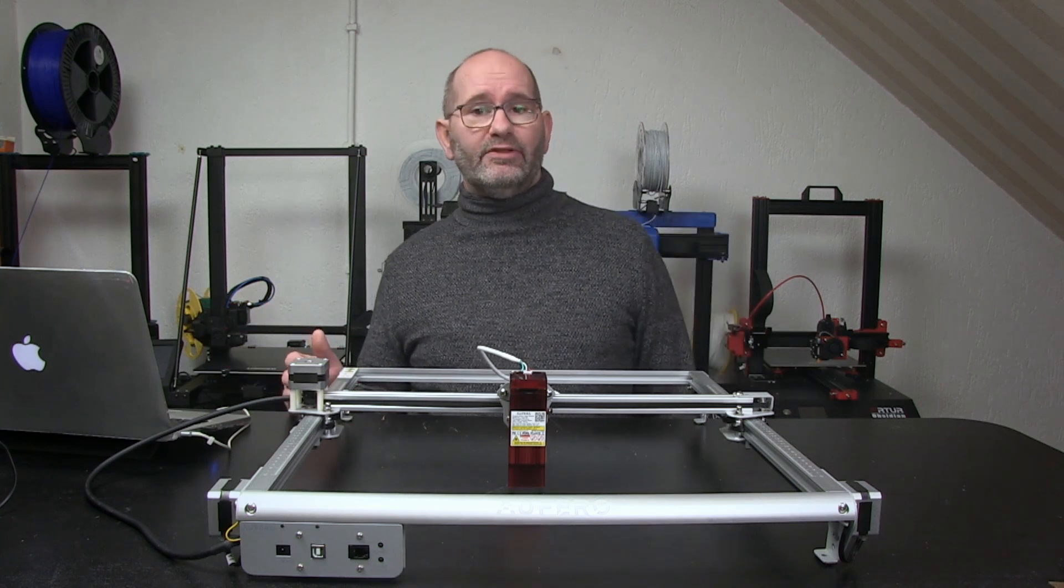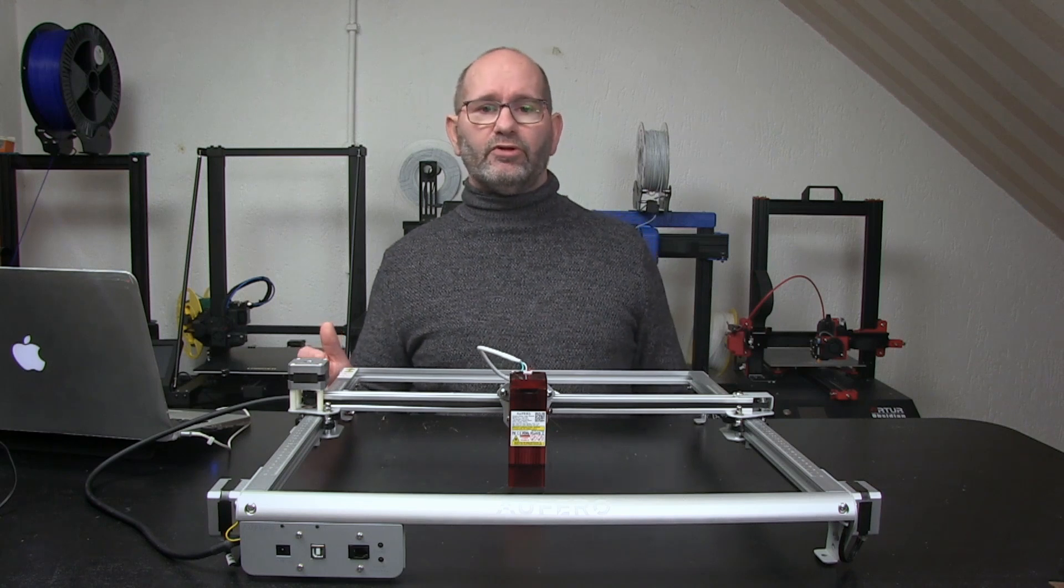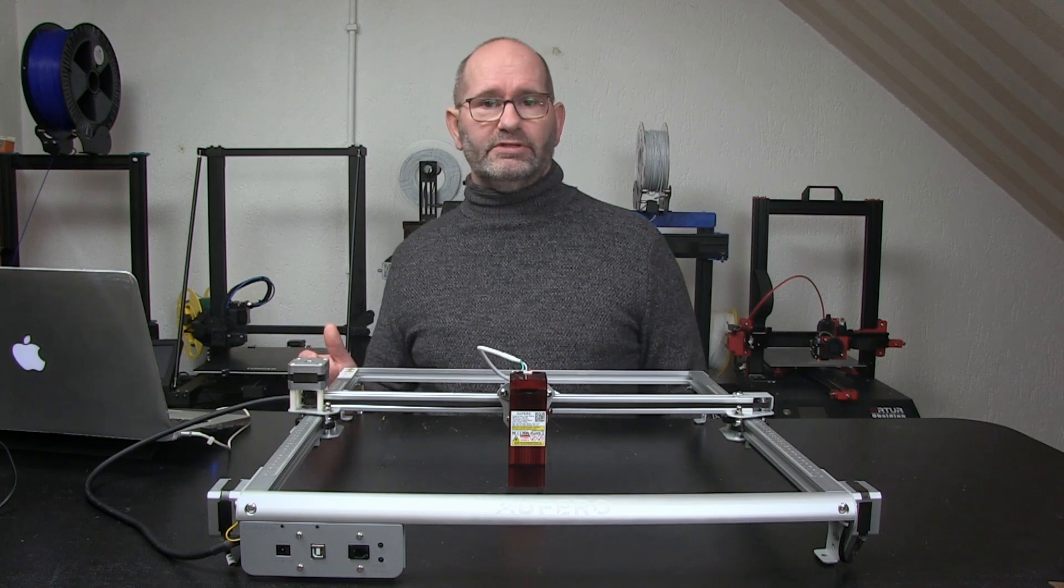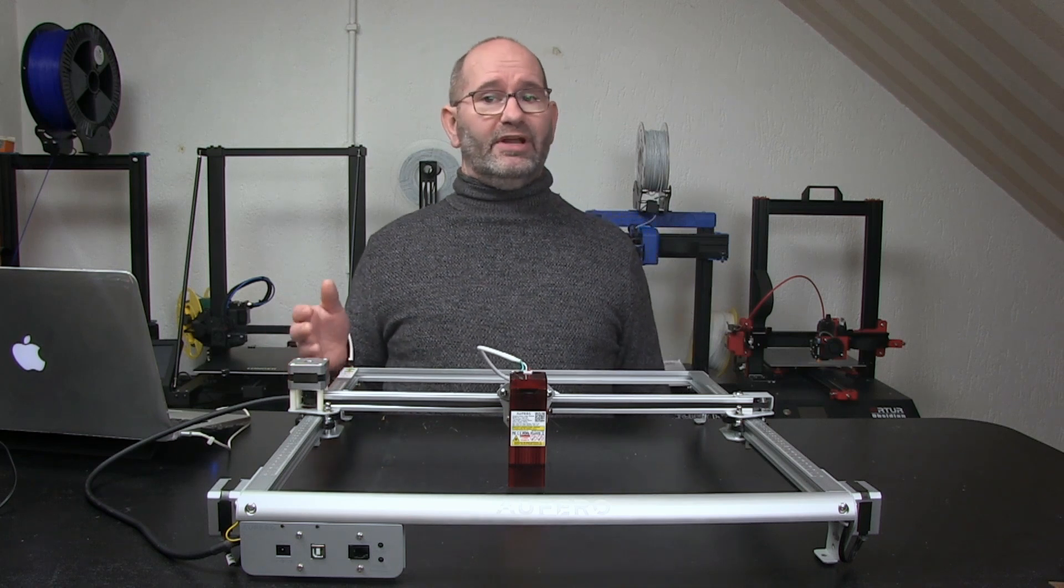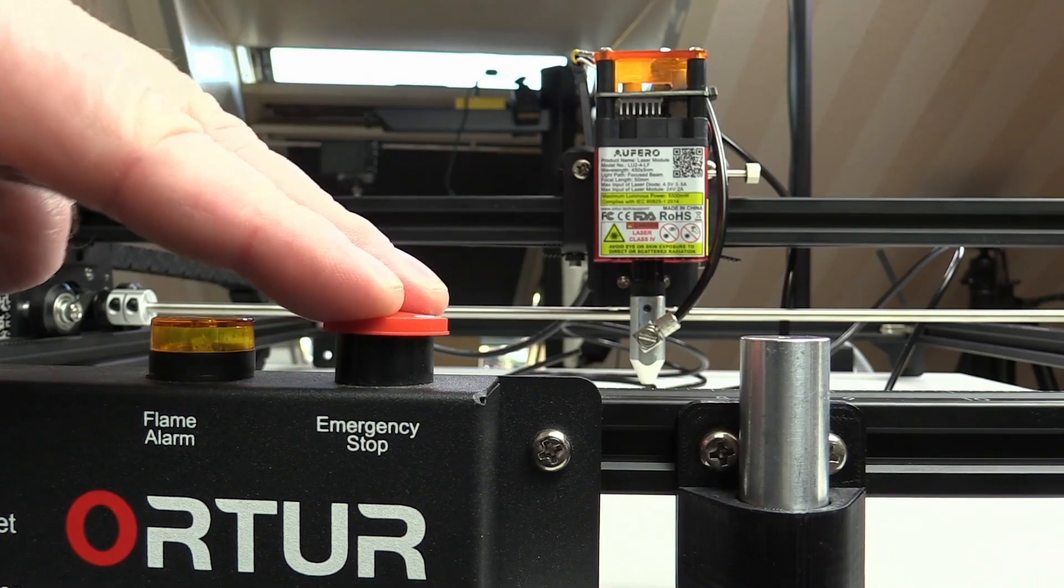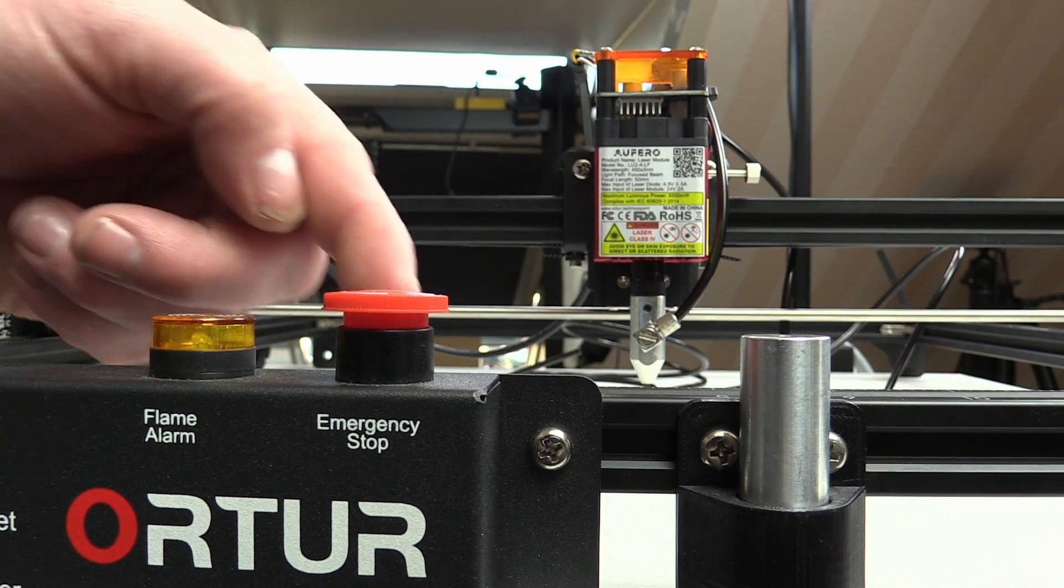The machine cuts the power to the laser after finishing a job or when losing a connection to the computer so the laser won't be burning at all time if something strange happens. Compared to the Orther Laser Master 2 Pro, the Afero Laser 2 misses the big power down knob to turn off the machine completely with just one touch of a button.